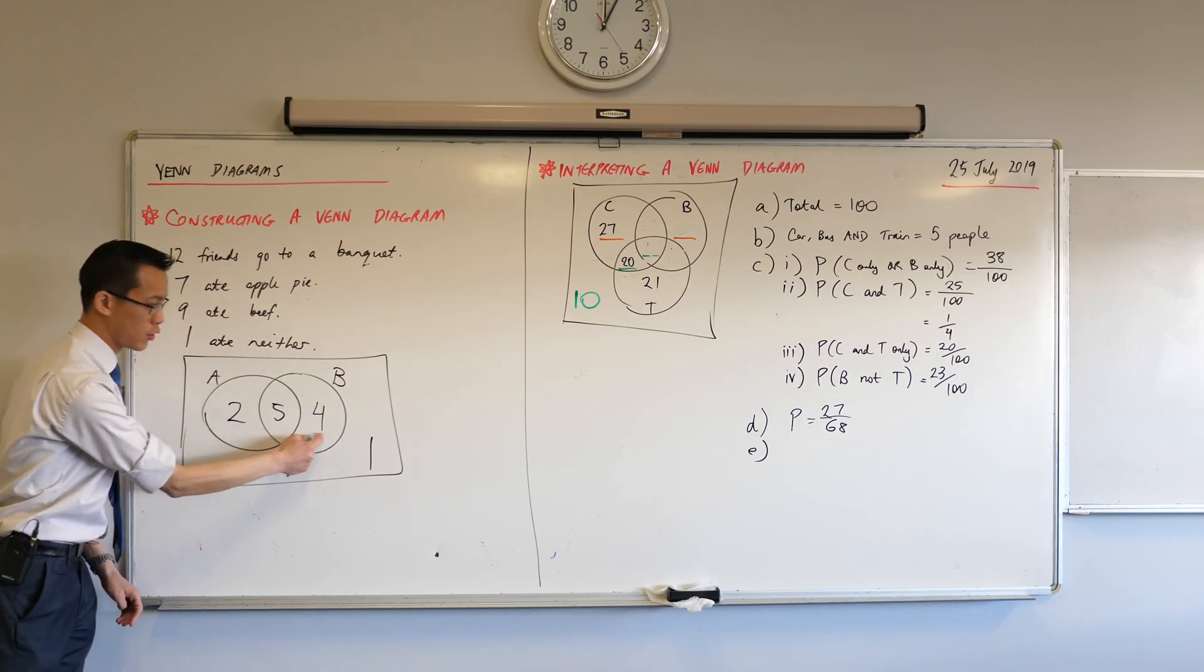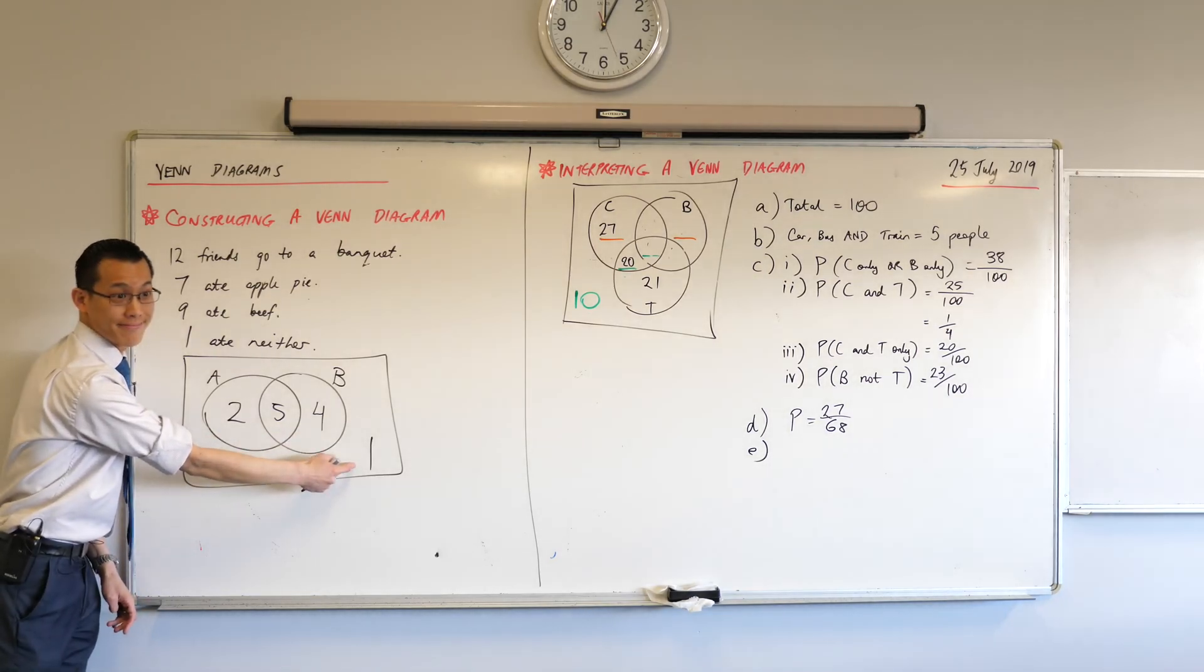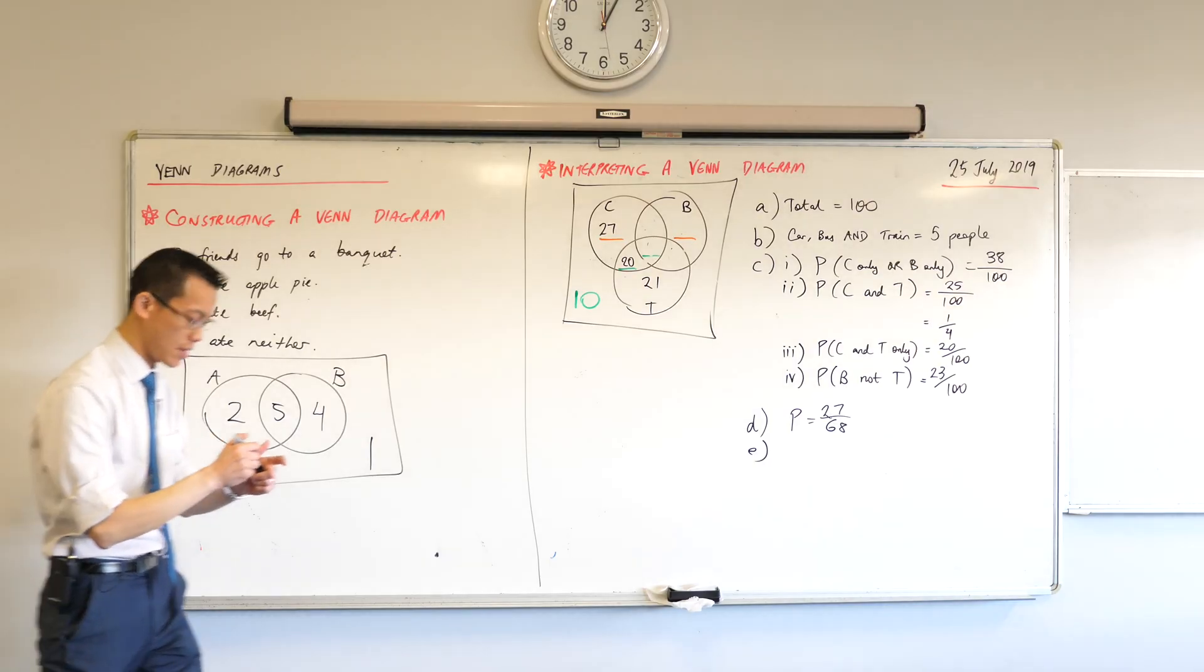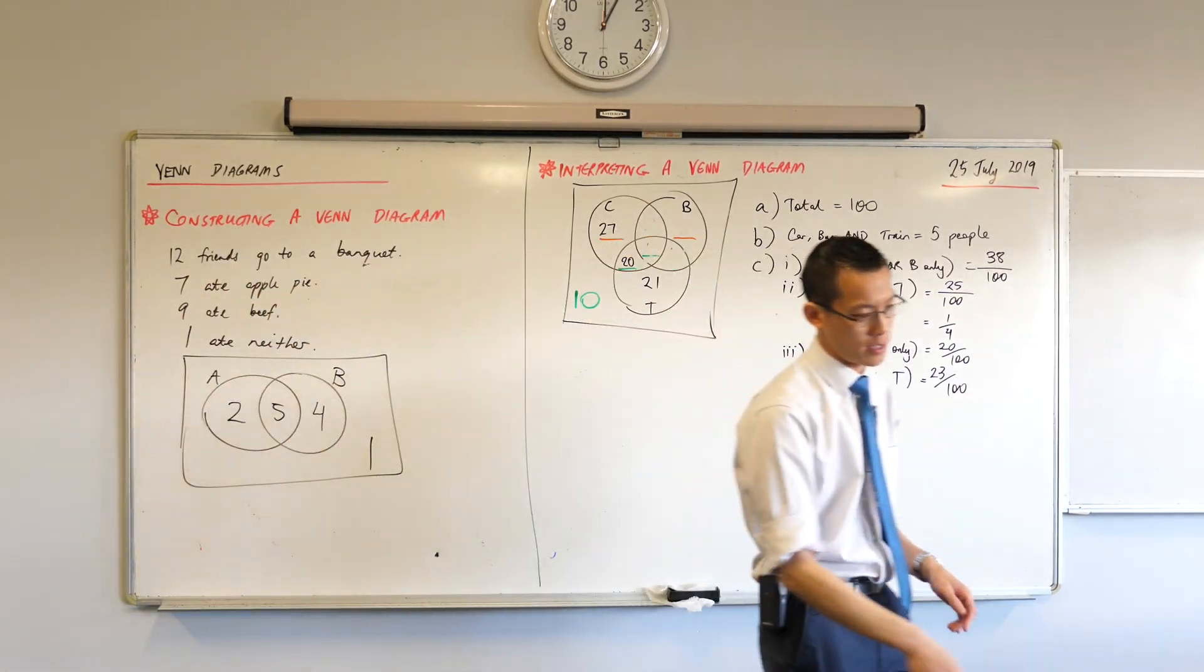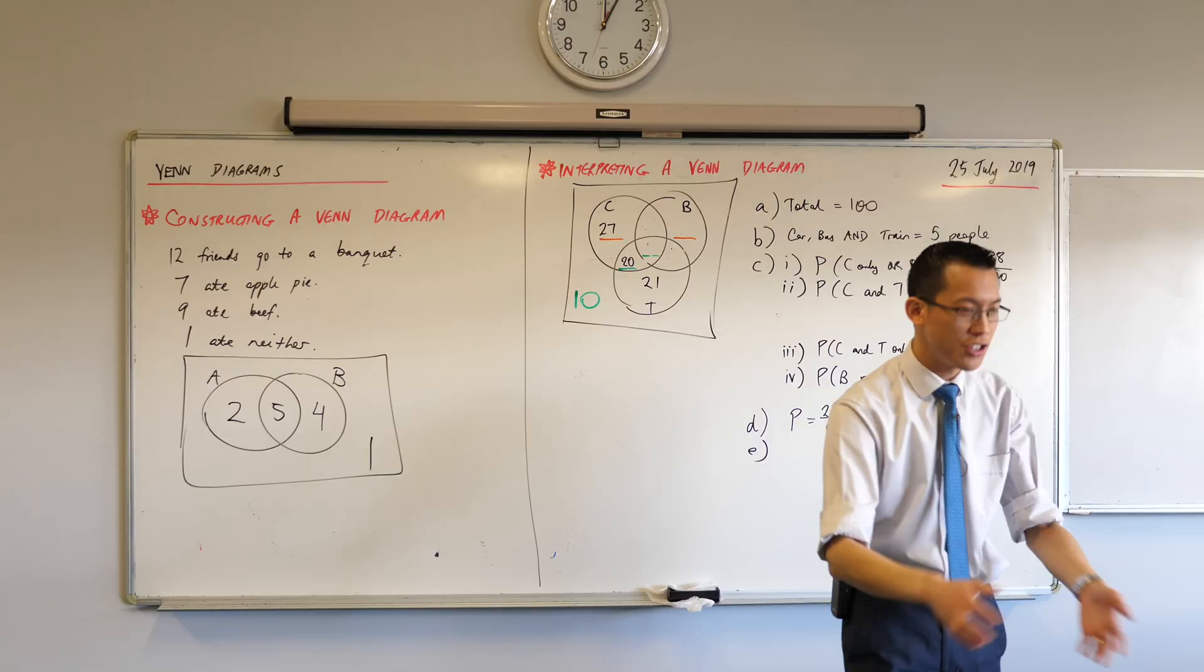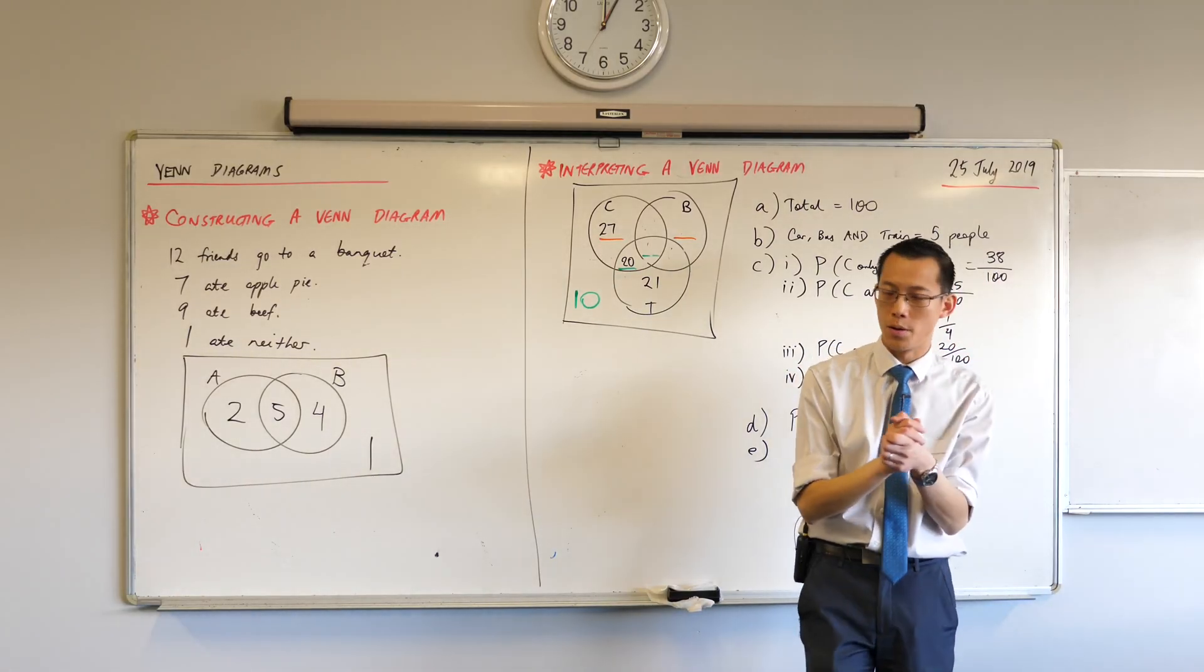Do a quick check. 2 plus 5 plus 4 plus 1. 12. Thumbs up. Okay. Let me ask you 2 questions on the basis of this. Number 1. If we... And you don't have to write this down. It's simple enough for me to pose to you.